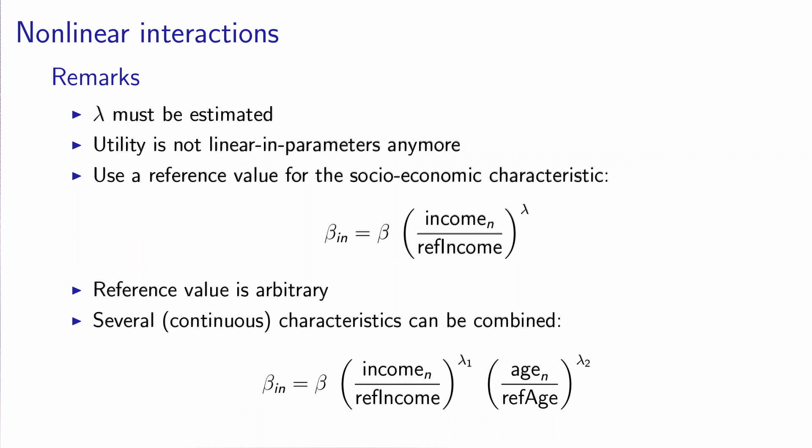In this case, when the income of individual n is the reference income, the β coefficient for this individual is actually the value of β, which is here.